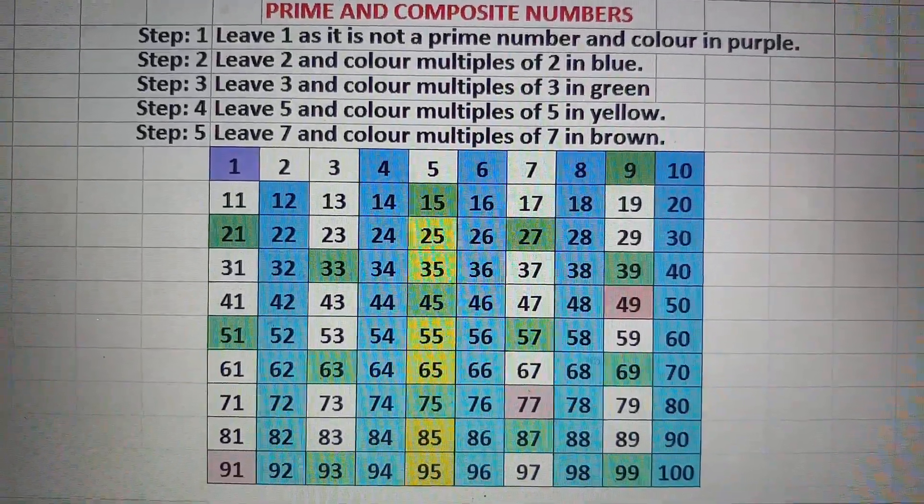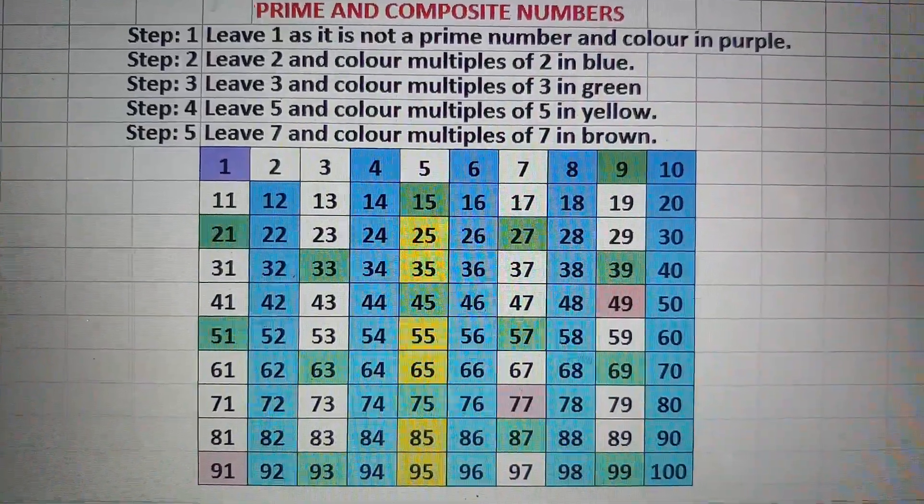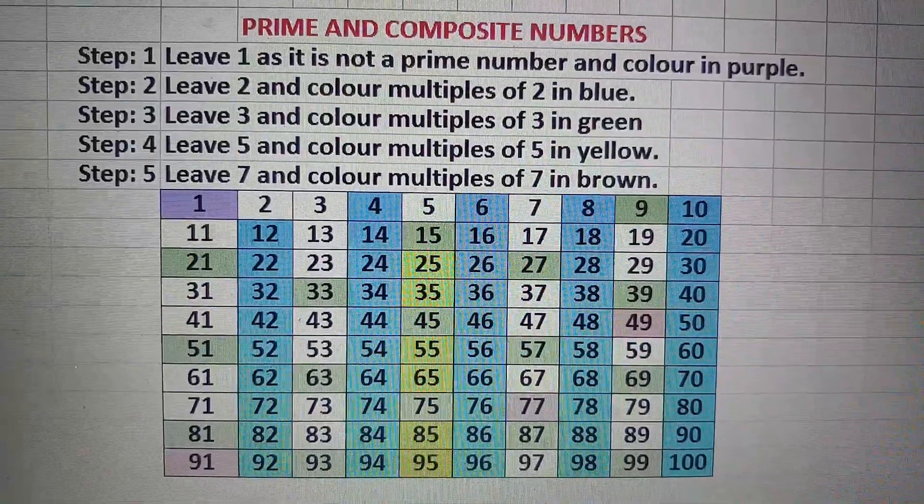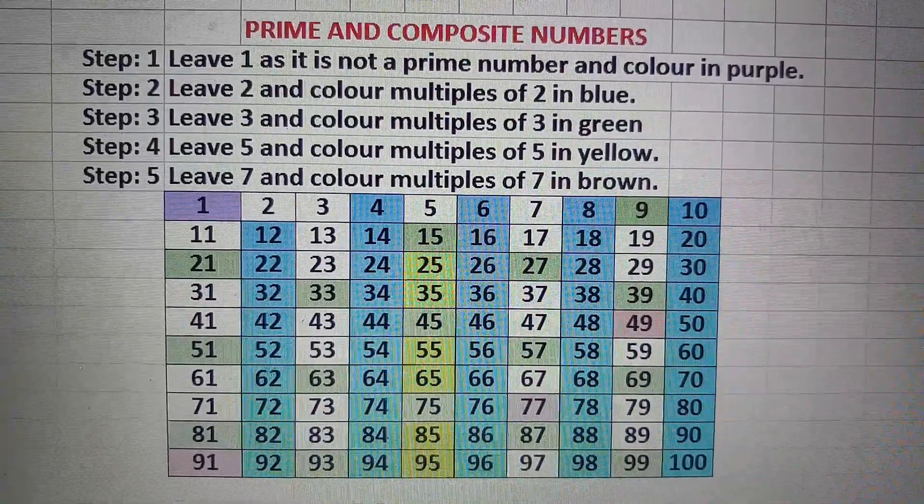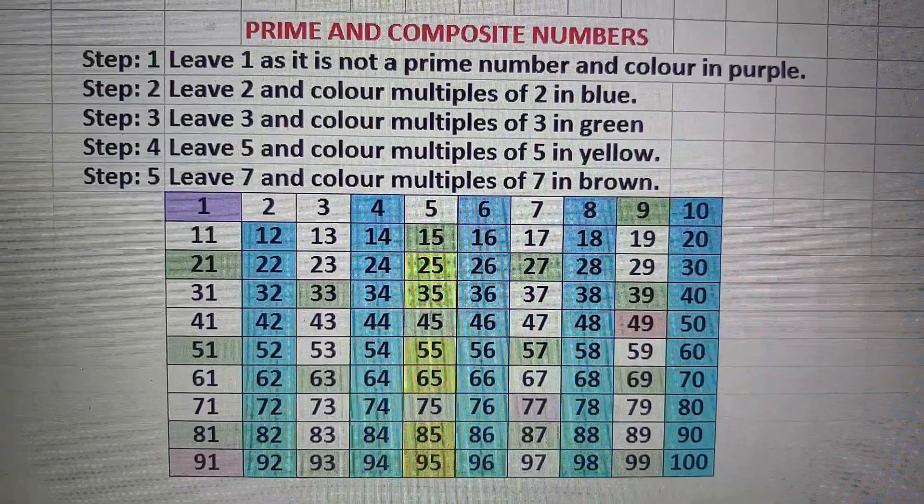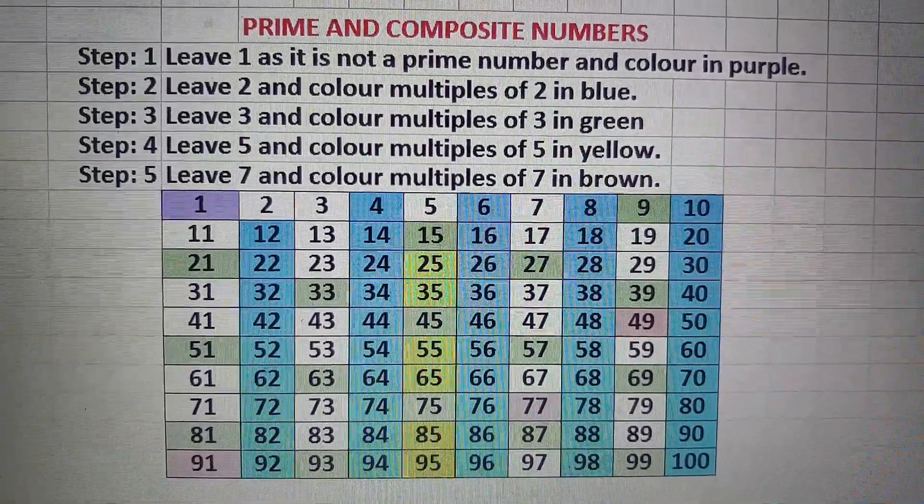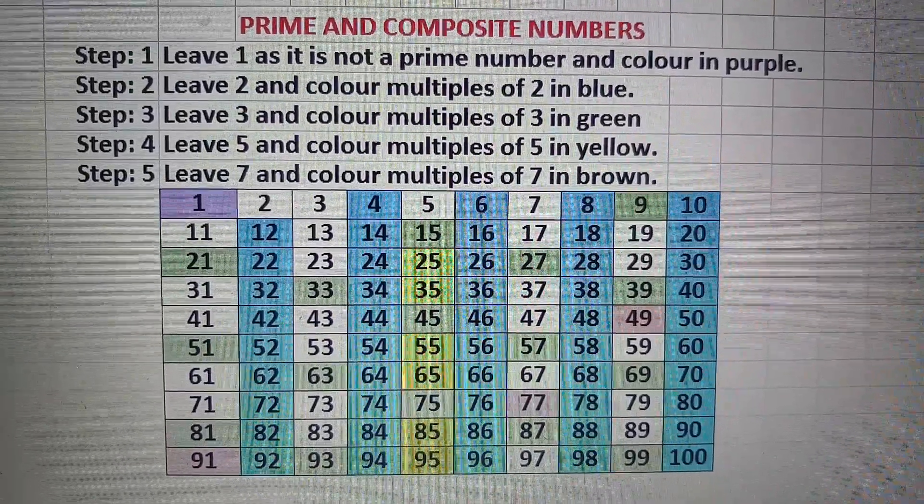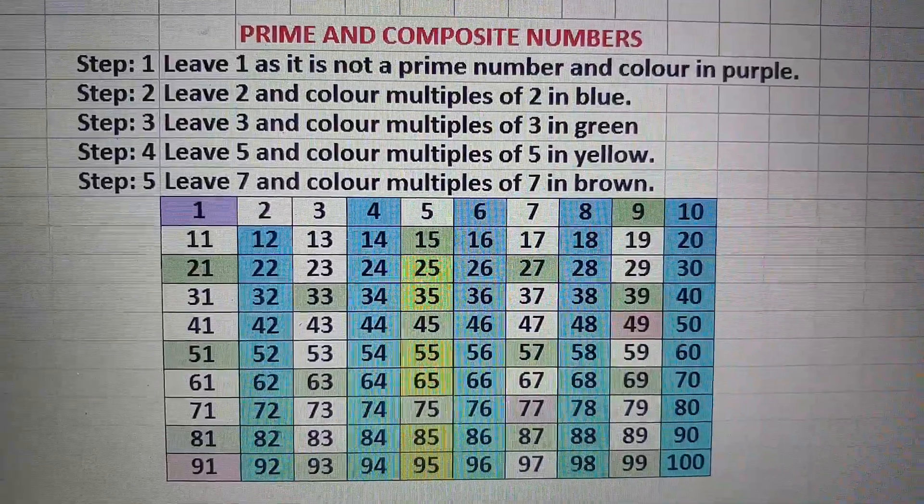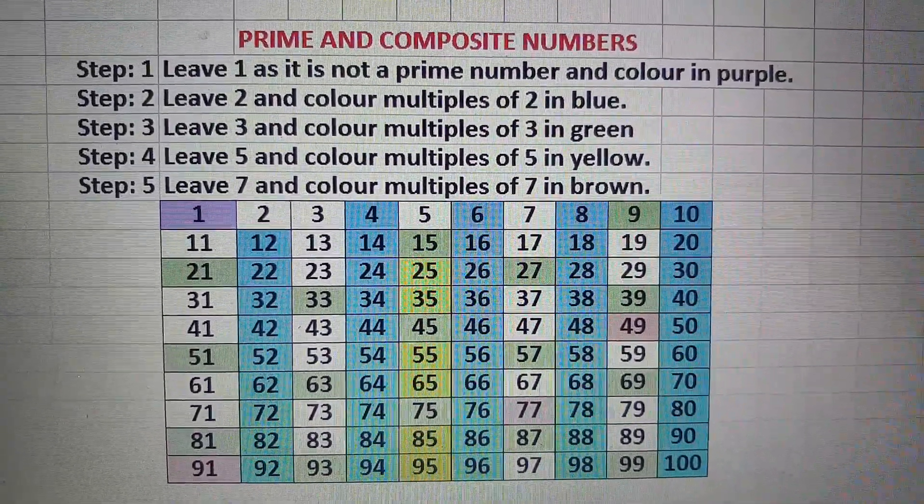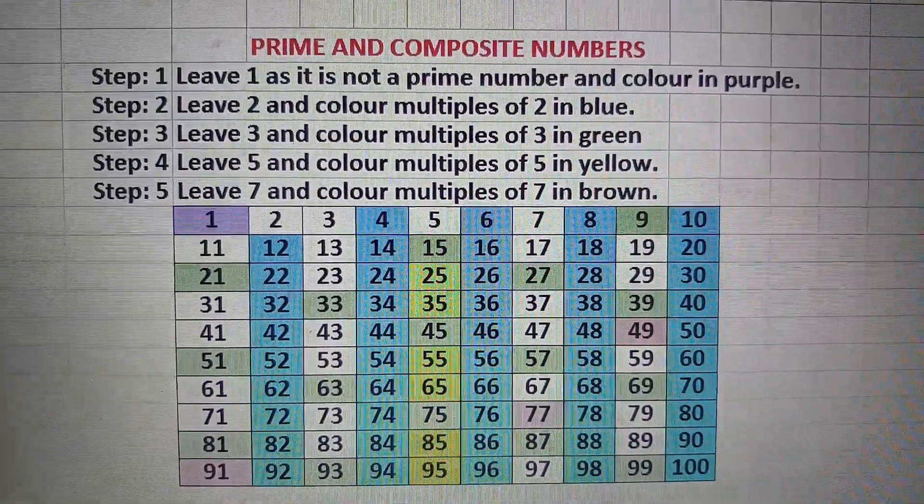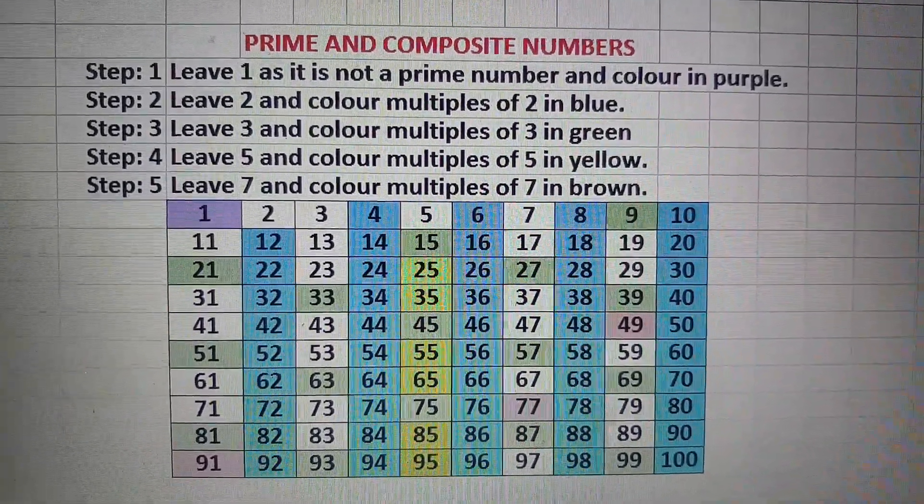Now we see that the numbers which are not colored are prime numbers. Therefore the prime numbers between 1 and 100 are 2, 3, 5, 7, 11, 13, 17, 19, 23, 29, 31, 37, 41, 43, 47, 53, 59, 61, 67, 71, 73, 79, 83, 89, and 97. Therefore there are 25 prime numbers between 1 and 100.